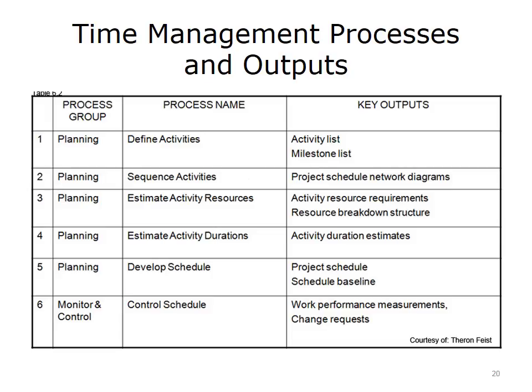The major key outputs for each of the six project time processes are indicated on this table. First, the planning process group will define activities — key outputs are an activity list and a milestone list. Second, the planning process group will determine the sequence of activities — the key output is a project schedule network diagram. Third, the planning process group will estimate activity resources — key outputs are activity resource requirements and a resource breakdown structure. Fourth, the planning process group will estimate activity durations — key output is activity duration estimates. Fifth, the planning process group will develop the schedule — key outputs are a project schedule and a schedule baseline. Finally, the team commences monitoring and controlling, involving controlling the schedule — key outputs are work performance measurements and change requests.